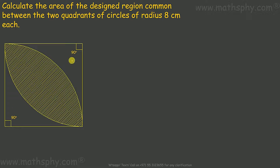We have two quadrants with radius 8. So this side is 8, this is 8, this is 8, this is 8, and this is also 8. The opposite angles are 90 degrees because we are dealing with quadrants.